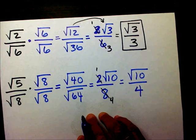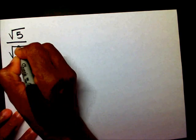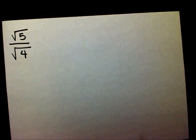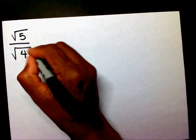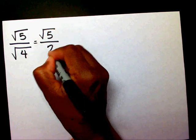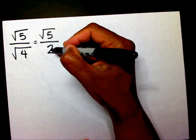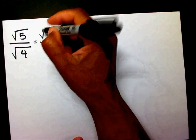I'd like to give you one to solve. Radical 5 over radical 4. Well, in this problem, if you notice, we already have a perfect square in your denominator. So therefore we can just write radical 5 over radical 4, and radical 4 is 2. We don't have to rationalize the denominator because we already had a perfect square in our denominator. So our final answer is radical 5 over 2.